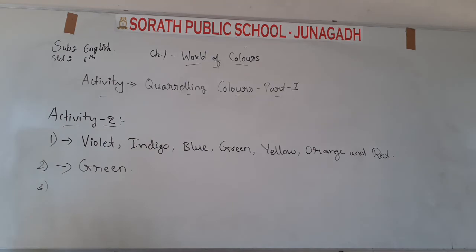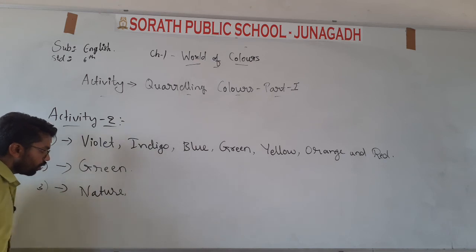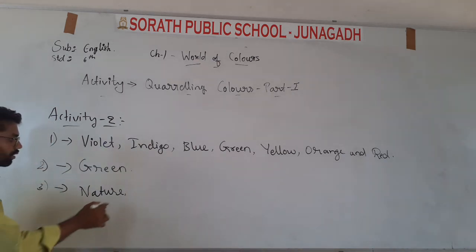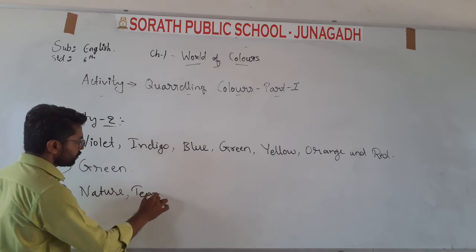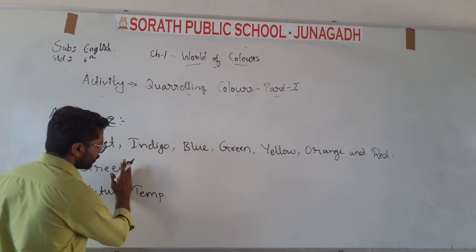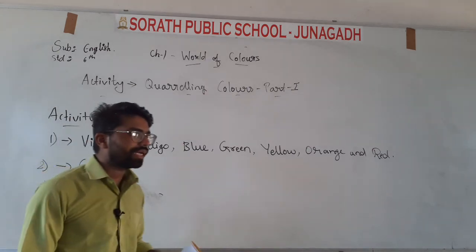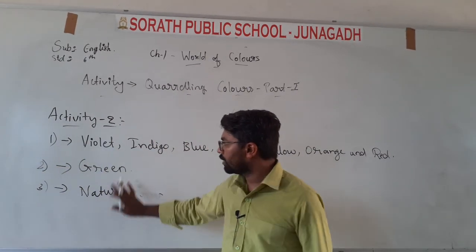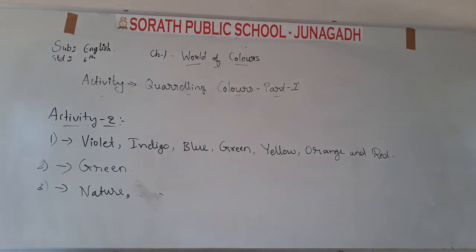I am seeing green color in nature, so I will write 'nature' as one thing I see in green. Green color is most seen in nature, so I will write nature as my answer. We have studied the colors violet, indigo, blue, green, yellow, orange, and red in the story. This completes Activity 2, and the other activities we will see in the next lecture.